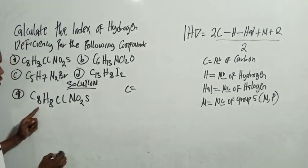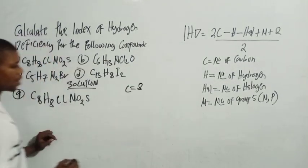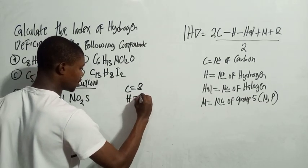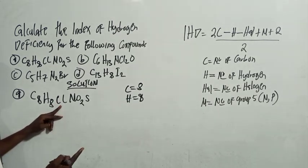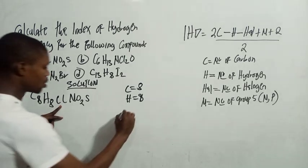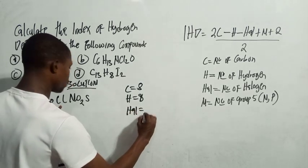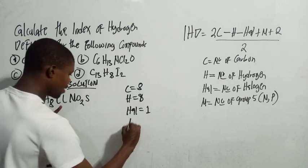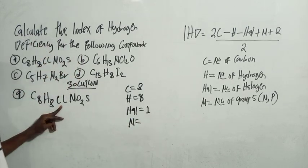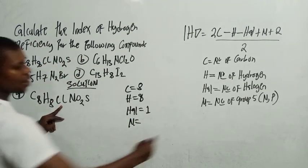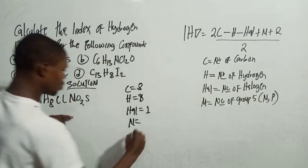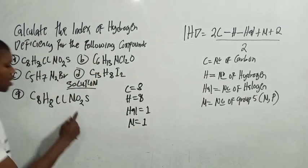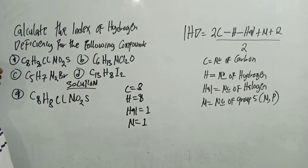Carbon is 1. Hydrogen is 3. Chlorine is a halogen, and how many halogens do we have here? We only have one. So the halogen count is 1. N is the number of group five elements, and group five elements include nitrogen and phosphorus. We have phosphorus here, which gives N = 1.